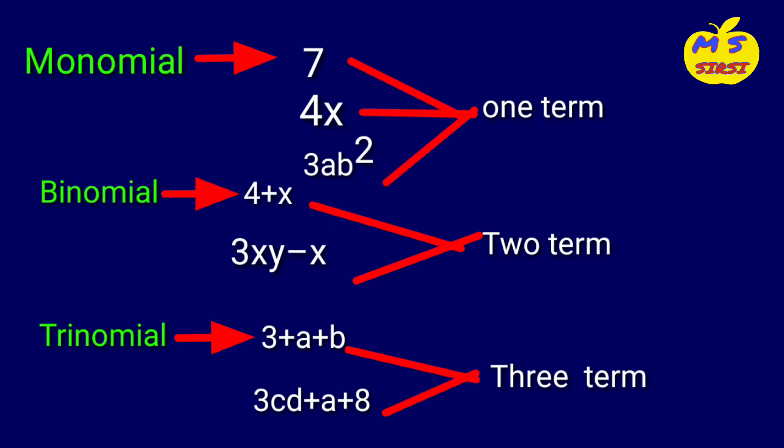First one is monomial, with one term. Seven is one term. Four x is one term. Three ab square is only one term. Seven and four x and three ab square each have only one term.